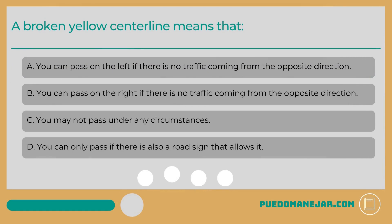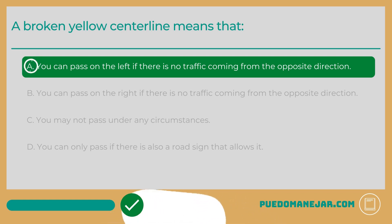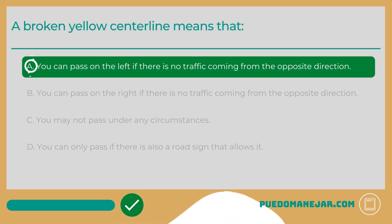A broken yellow centerline means that: A. You can pass on the left if there is no traffic coming from the opposite direction. B. You can pass on the right if there is no traffic coming from the opposite direction. C. You may not pass under any circumstances. D. You can only pass if there is also a road sign that allows it. The answer is A. A broken yellow centerline dividing lanes moving in opposite directions indicates that passing on the left is permitted when the road is clear of oncoming traffic.